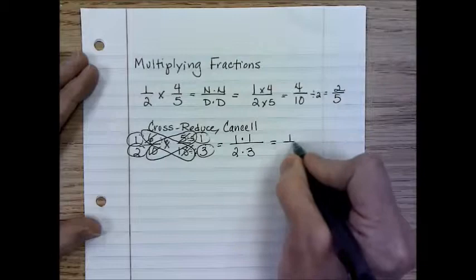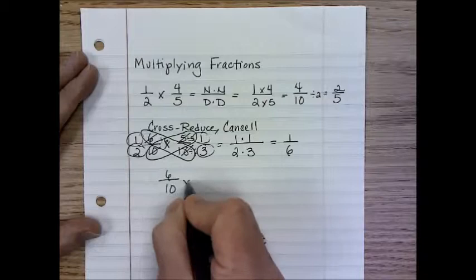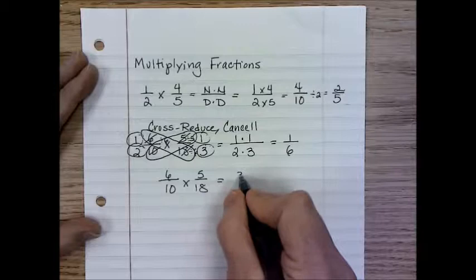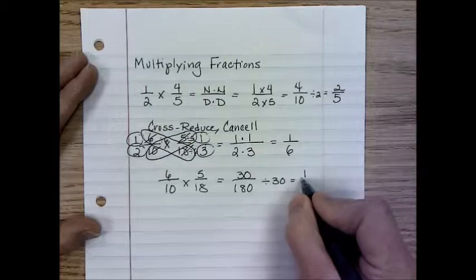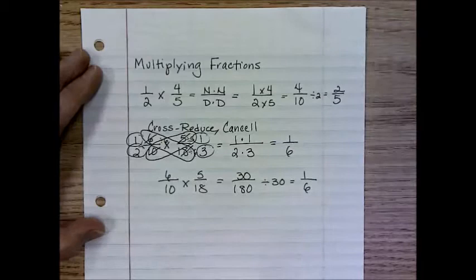And if we want to multiply this all the way out, we know that six times five would be thirty. Ten times eighteen is one-hundred-and-eighty. That is kind of big. We would divide by thirty here, and notice it is one-sixth. So we want to cross-reduce first to make our problems easier to solve.